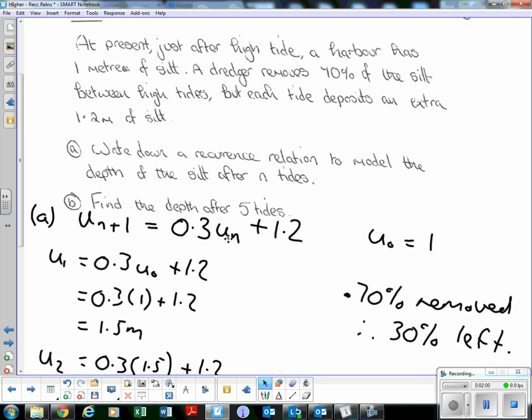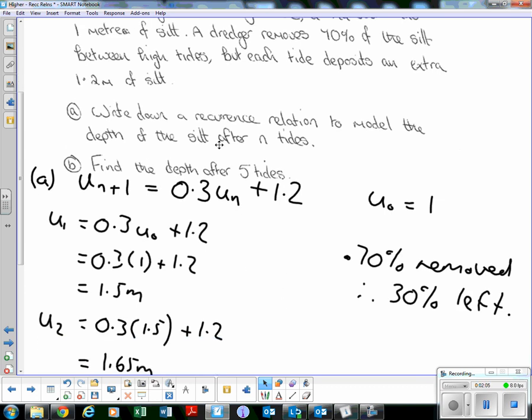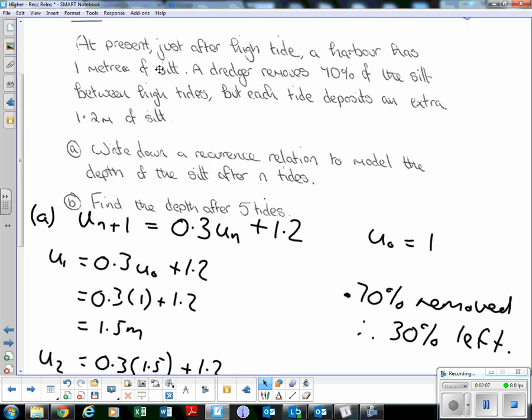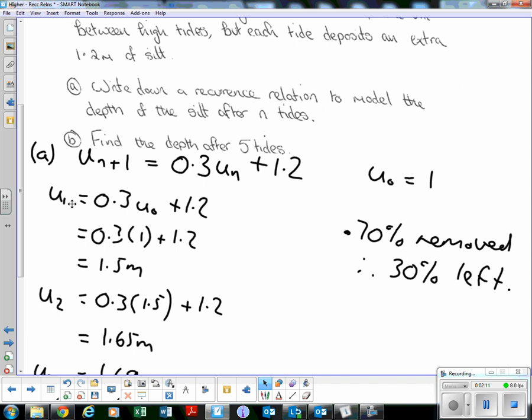Find the depth after five tides. We know initially there is one meter of silt, so our u_0, our initial value, is 1. So u_1 will be 0.3 times u_0 plus 1.2. n+1 is the next one, n is the current one, so u_0 is the current one to start with.